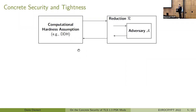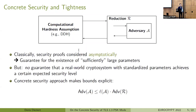When we want to prove a cryptosystem secure, we usually reduce its security to some computational hardness assumption — for example, DDH. Classically, this reduction is considered asymptotically, meaning the security proof gives a guarantee that there exist sufficiently large parameters, such as the size of the Diffie-Hellman group, so that the scheme is secure in some well-defined security model. But for real-world cryptosystems relying on standardized parameters, these asymptotic results don't give meaningful guarantees. Here the concrete security approach comes into play, making the bounds for running time and success probability explicit.